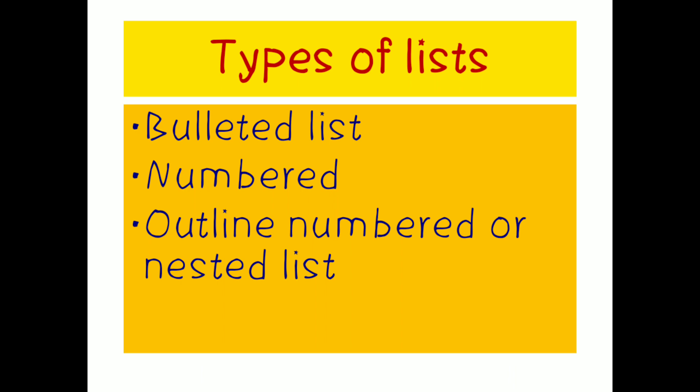So what are the different types of lists? The first one is a bullet list, the next one is a numbered list, and then the outline numbered or nested list. Bullet list means we will be getting a small dot. Here itself it is clear — I have given all the points one by one, and besides each point there is a small dot. These particular dots are called bullets.